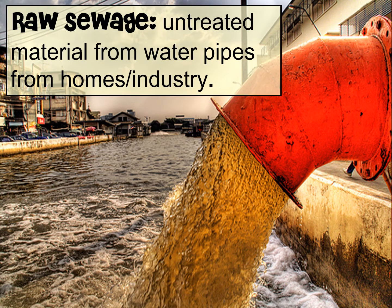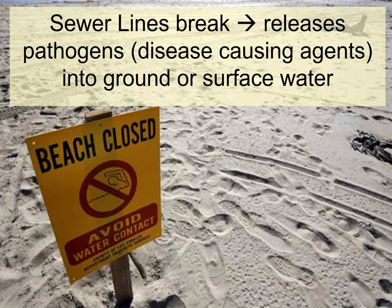The next category of water pollution is raw sewage — untreated water material coming from pipes from industries or homes. Here in Los Angeles, we do have sewer lines that break. Our sewer lines deliver wastewater to treatment plants where it gets cleaned and placed back in the ocean, but sometimes those sewer lines break and it releases a lot of pathogens into the ground or surface water.